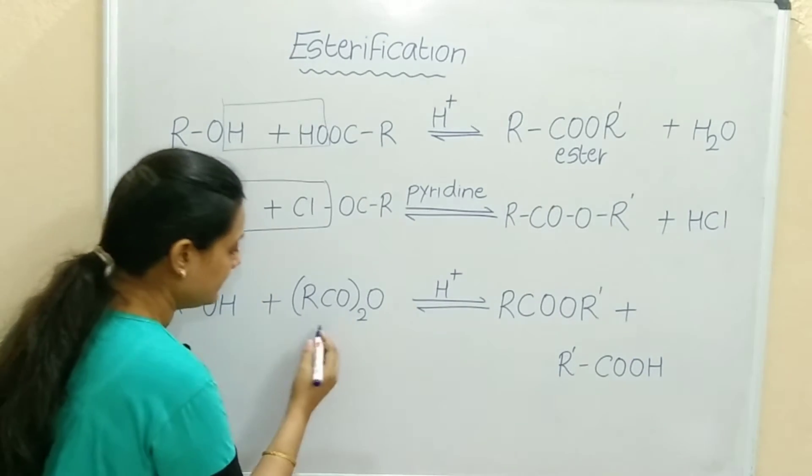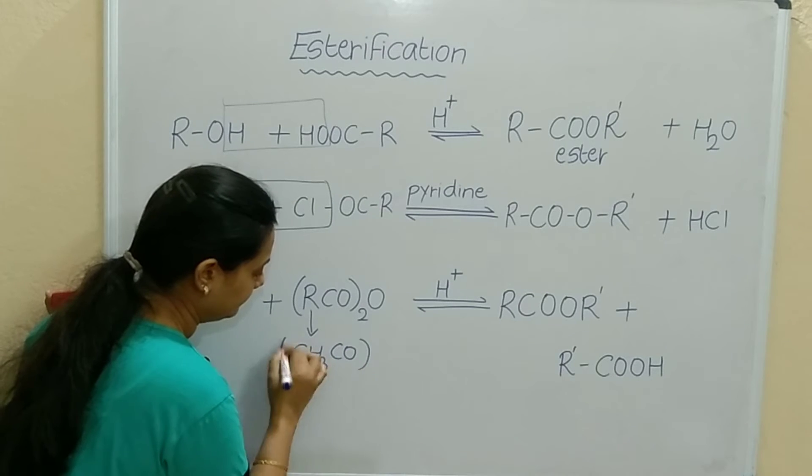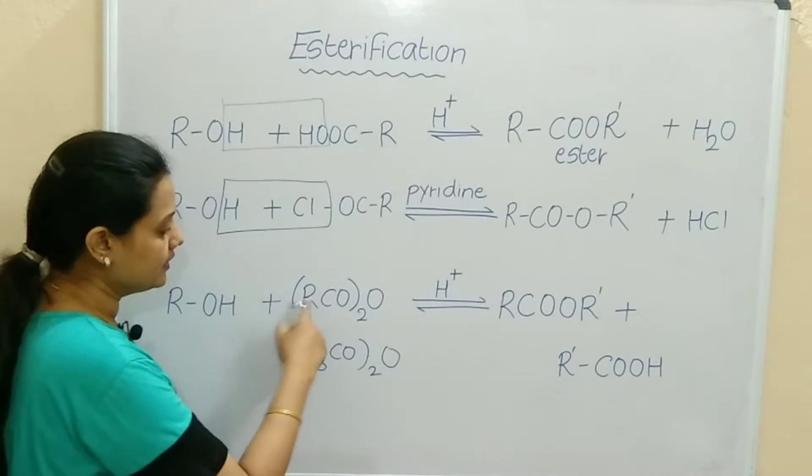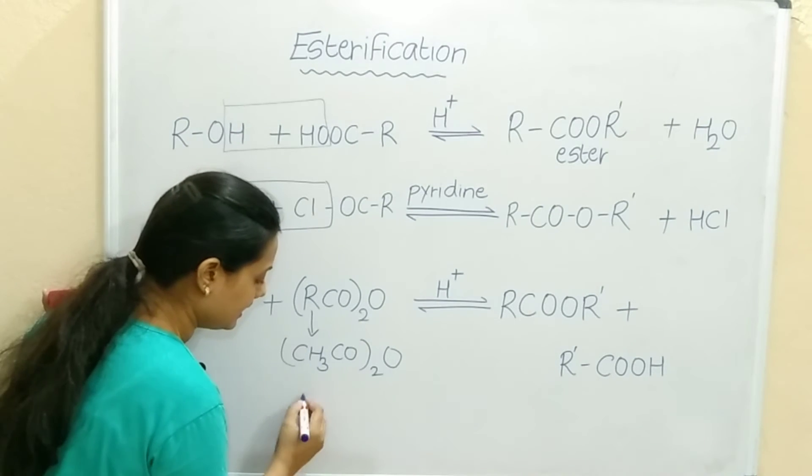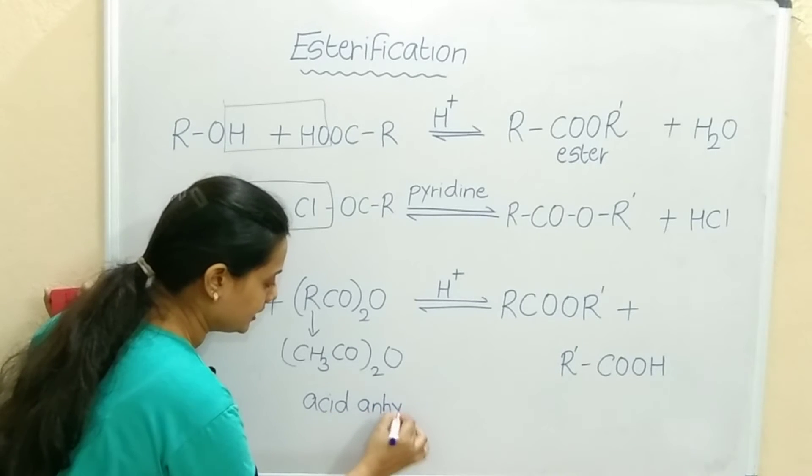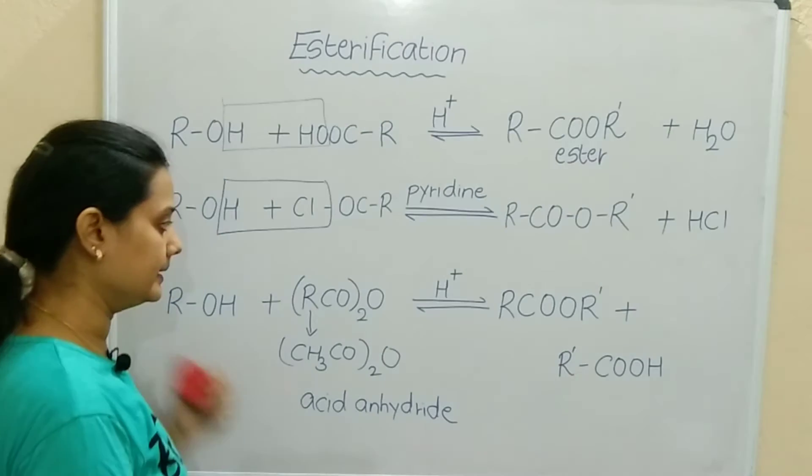If you take CH3 here then it is acetic anhydride. If you are just giving a general name, it will be acid anhydride. If you substitute R by CH3, it is acetic anhydride.